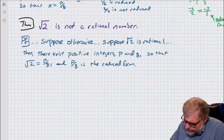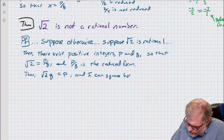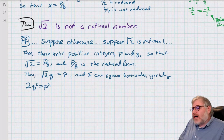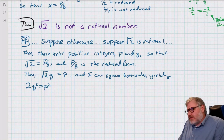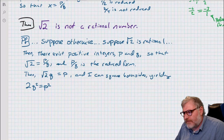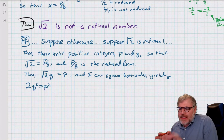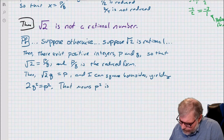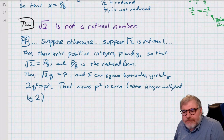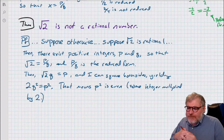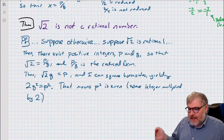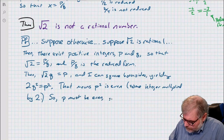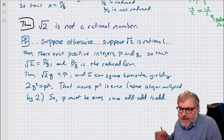Let's multiply both sides by Q, then square everything — we wind up with 2Q² = P². That means P² is an even number — it's some integer multiplied by 2. Well, if P² is even, that means P must be even, because if P was odd, then odd times odd is odd again. So in order to wind up with an even number, P must have been even to begin with.